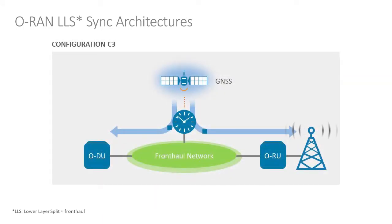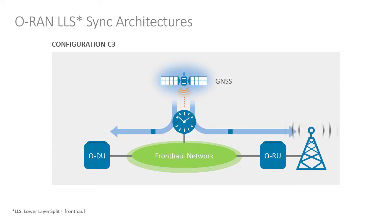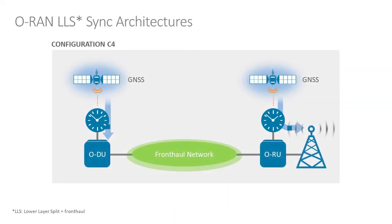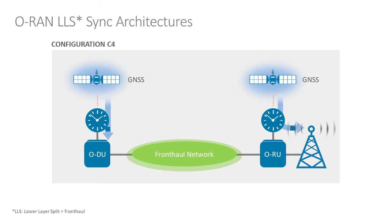For C3, the front-haul network is an intermediary delivering synchronization outwards to both the DU and the ORU. And for configuration C4, independent synchronization flows source to the DU and independently to the ORU.